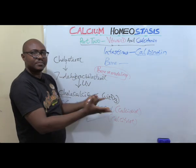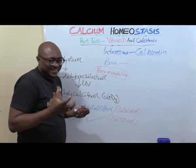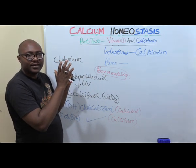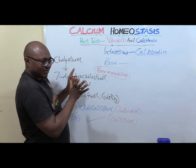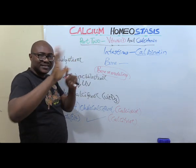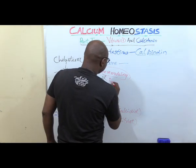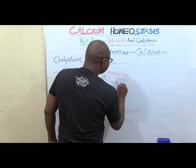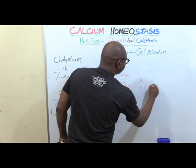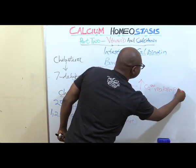In the kidneys, similar to parathyroid hormone, vitamin D aids the reabsorption of calcium. It does that around the proximal tubule, whereas parathyroid hormone acts around the distal tubule. So in the intestines, vitamin D increases calcium reabsorption.